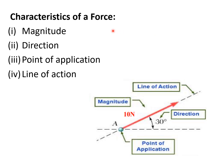The characteristics of a force means the terms or parameters required to define a force completely: magnitude, direction, point of application and line of action. If you see this diagram, point A is the point of application where the force approaches the body. The arrow represents the direction, which is 30 degrees from the horizontal. 10 Newton is the magnitude of that force, and the trajectory of that force is the line of action.